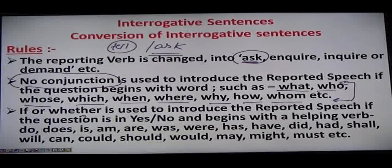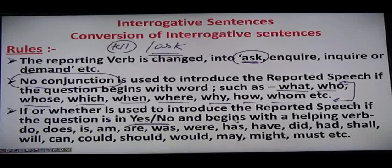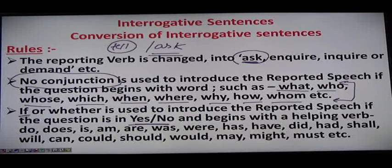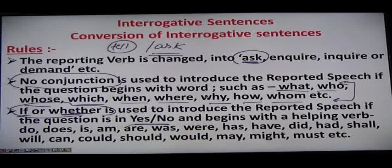'If' or 'whether' is used to introduce reported speech if the question is a yes/no question and begins with a helping verb — do, does, is, am, are, was, were, or any auxiliary. If the question begins with any helping verb or auxiliary, we use either 'if' or 'whether'. So when we have a WH-series, no conjunction is used; when we have auxiliaries, we use 'if' or 'whether'.